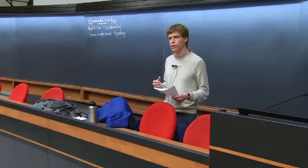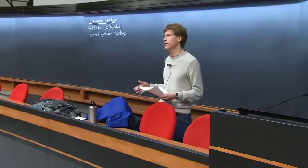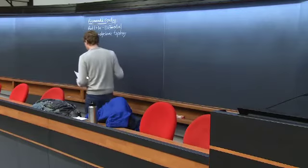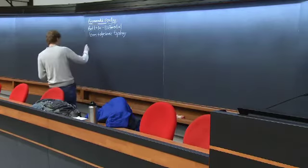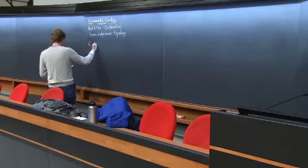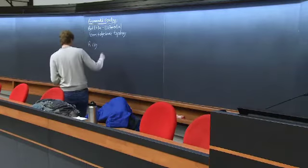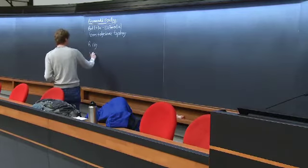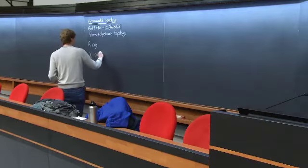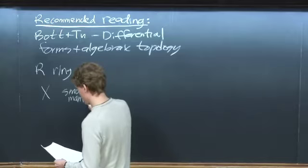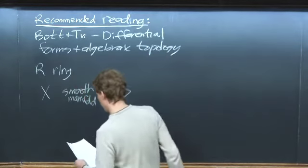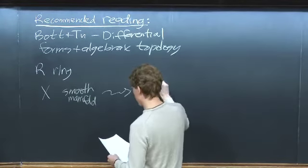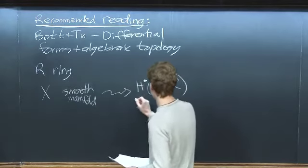I don't want to really assume anything aside from some basic mathematical sophistication. So what is cohomology? For any ring R, cohomology with coefficients in R is going to associate a smooth manifold X with a graded R-algebra — cohomology of X with coefficients in R.